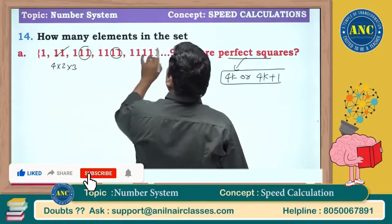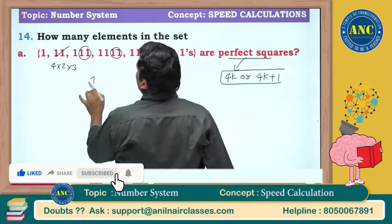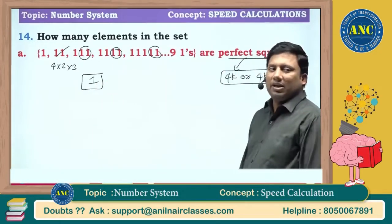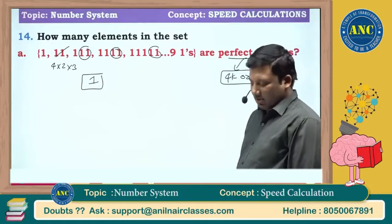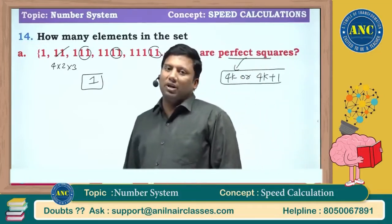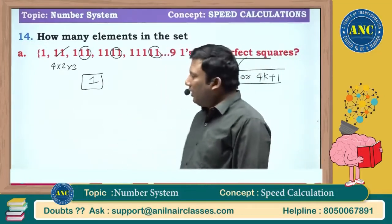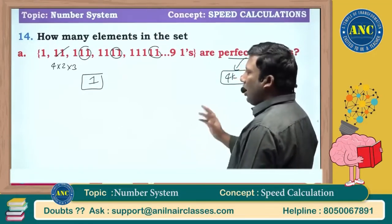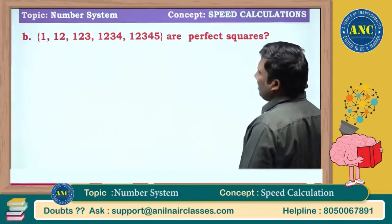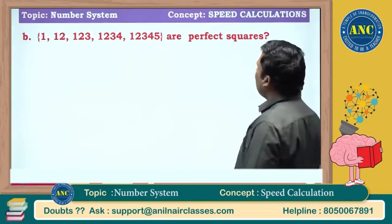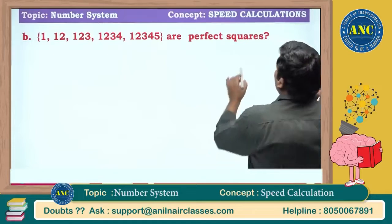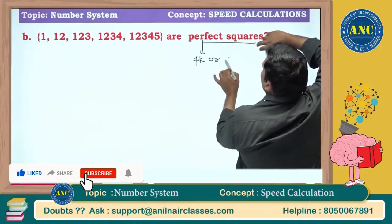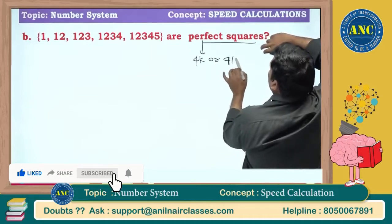All the last two digits here are of the form 4×2+3, so the answer is there is only one number which is a perfect square, and that number is 1. For all other numbers, the last two digits give 4×2+3, which means they are all 4k+3. Easy question if you know the logic — any perfect square is of the form 4k or 4k+1.